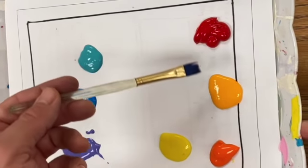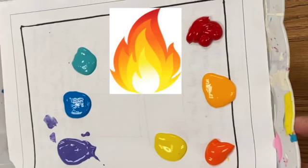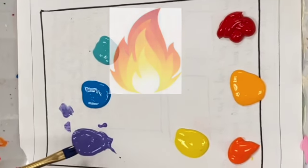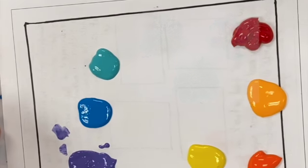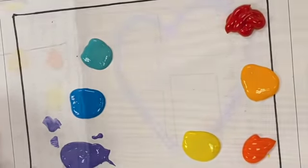So warm colors are red, orange, and yellow, or the colors you see when you look at fire. Cool colors are blues and purples and even greens, the colors you think of when you look at the ocean or icicles.